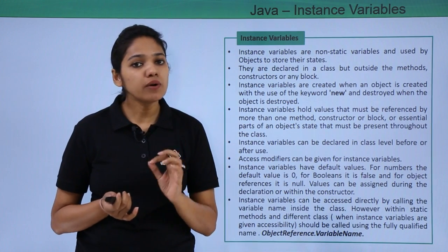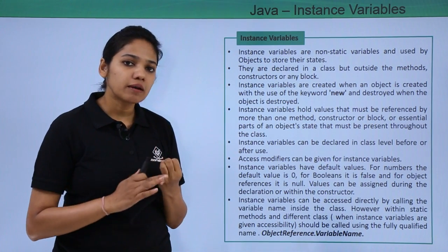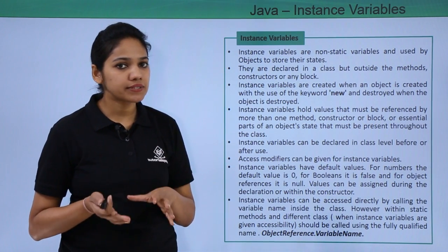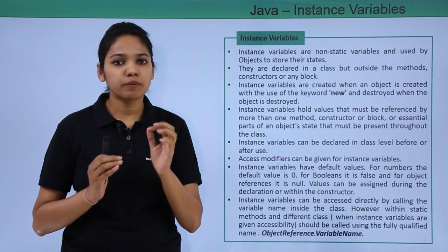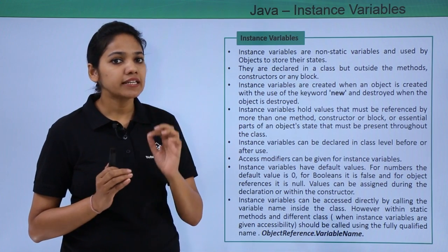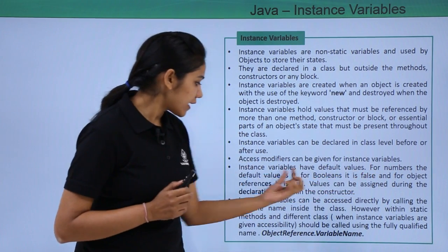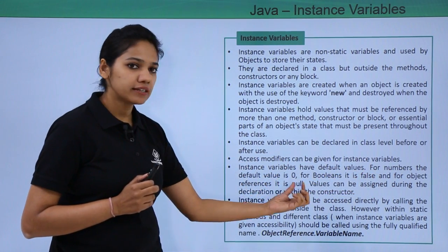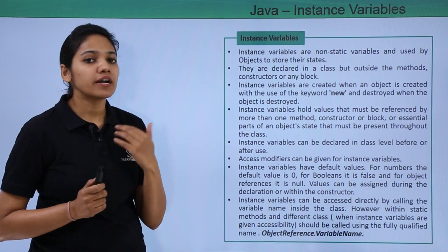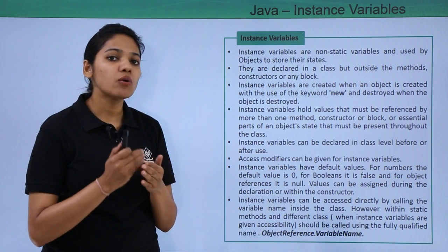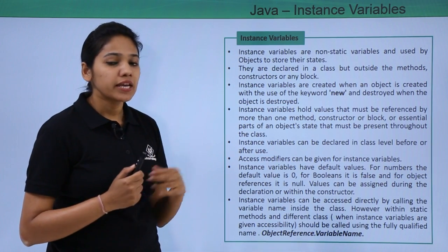Yes, we do have default values for instance variables. For numbers it will be 0, for boolean it will be false, and in case of an object reference it will be null. But you need to understand how and when we use them.